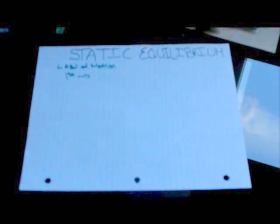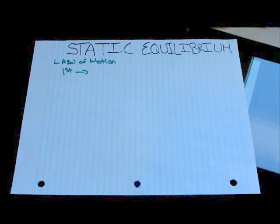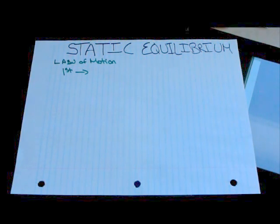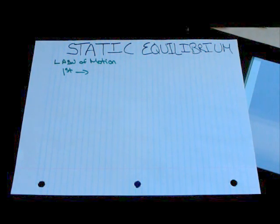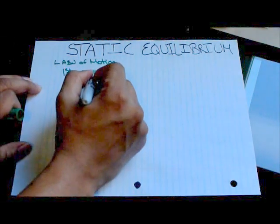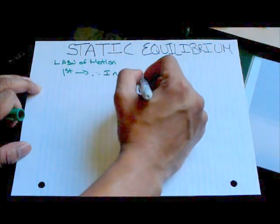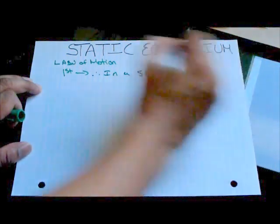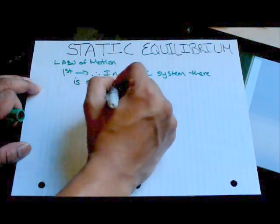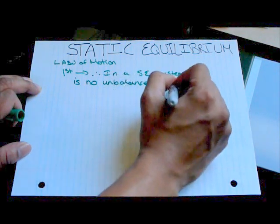However, in a static equilibrium question, remember we know that there is no... Let me see if I can focus this. Just had to refocus the camera. So remember, in a static equilibrium problem, there is no acceleration, which means there's no external unbalanced force acting in the system. Therefore, in a static equilibrium system, we know that the object will stay at constant velocity. Therefore we can assume in a static equilibrium system there is no unbalanced external force.